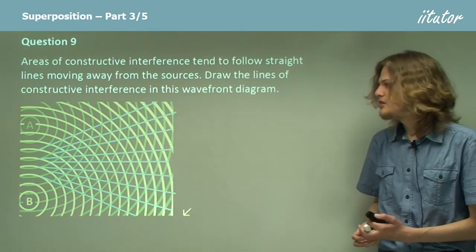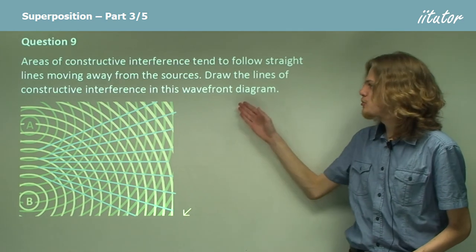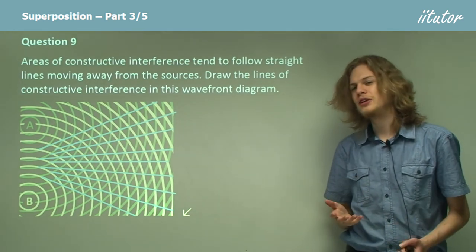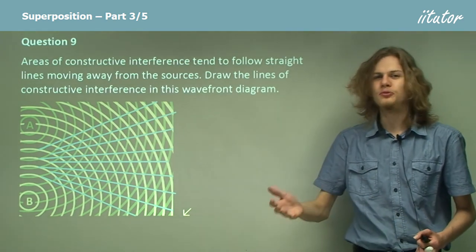We can see that these little blue lines are joining up crosses where constructive interference occurs between the two sources.